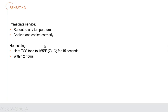When reheating TCS foods for hot holding, bring them up to 165°F, measuring for 15 seconds to ensure an accurate reading, and have that food reheated within two hours.